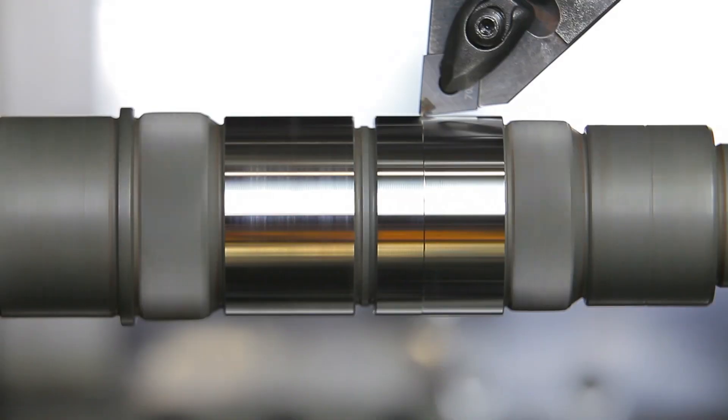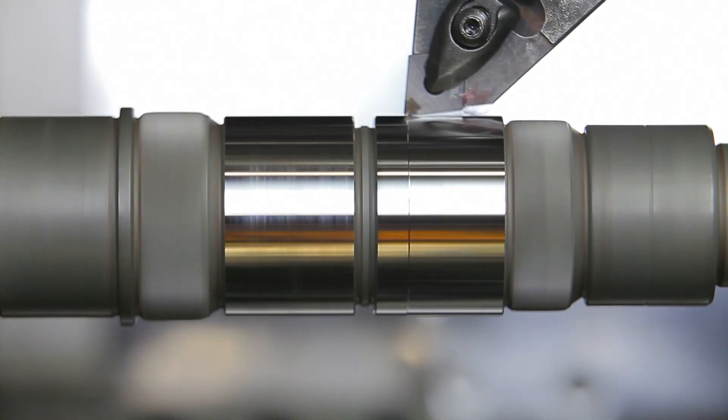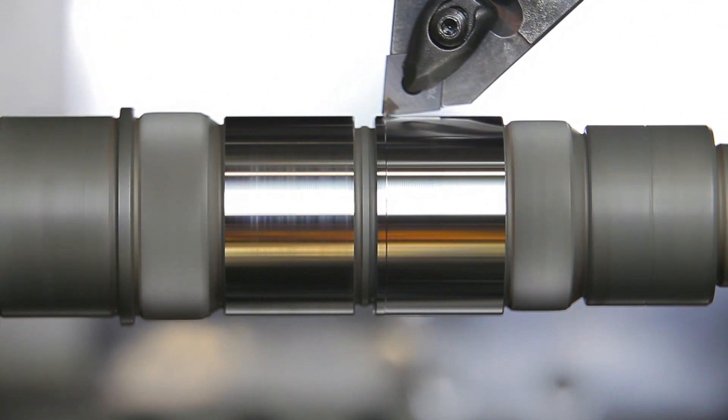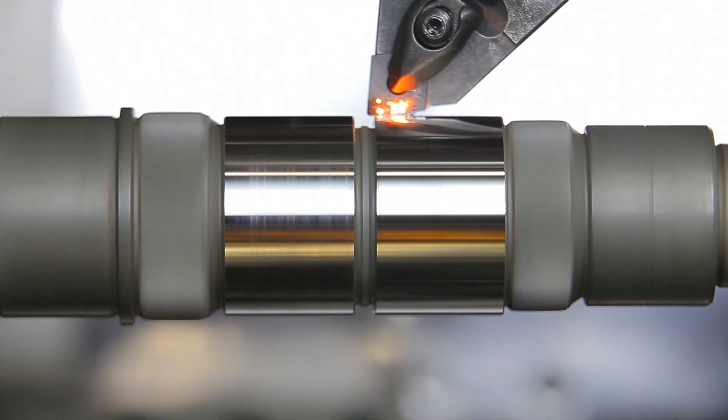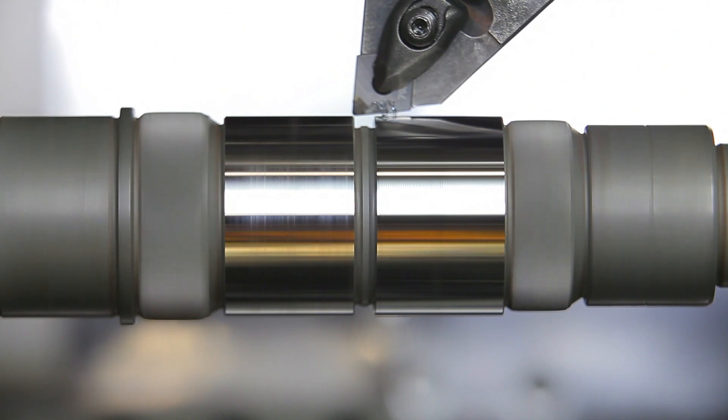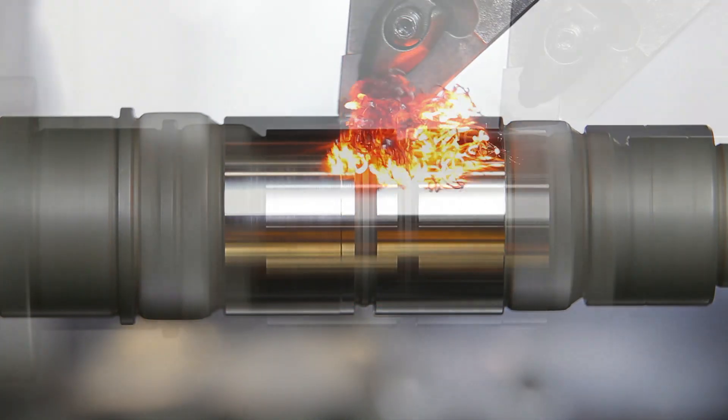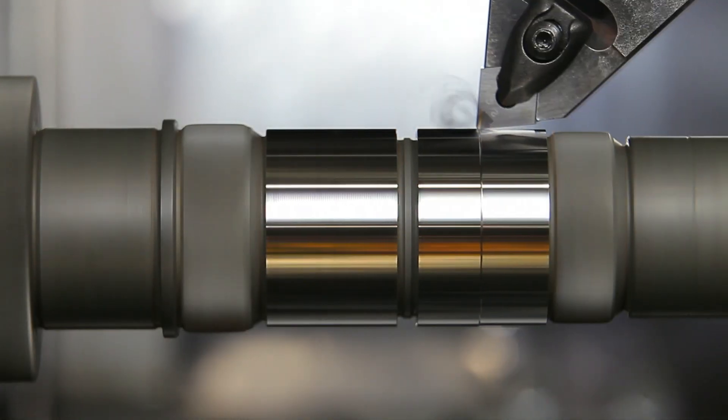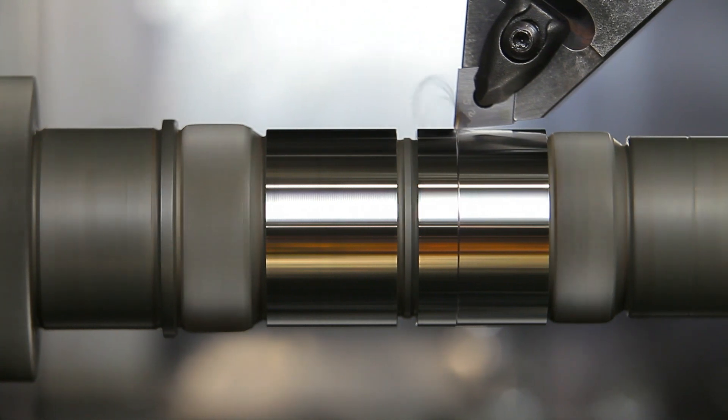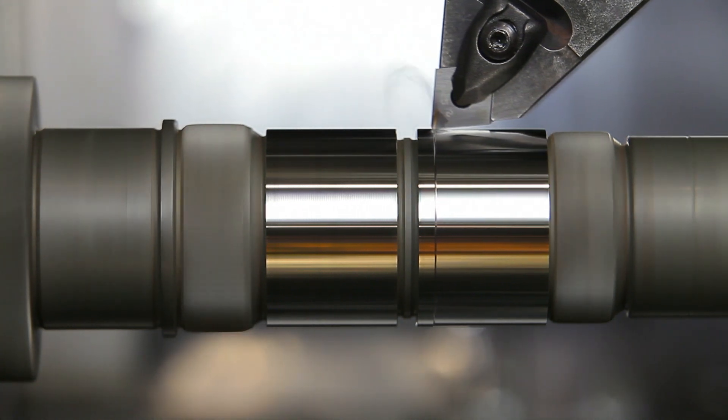Let's have a look at how chamfer size affects tool life in interrupted cutting. First, we use a 30-degree chamfer, 0.1 mm in width. Then we change to a larger chamfer, 35 degrees and 0.2 mm in width.